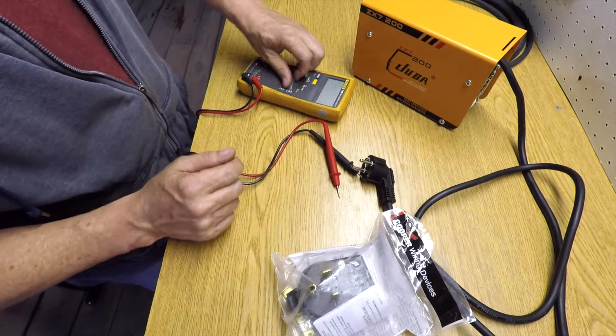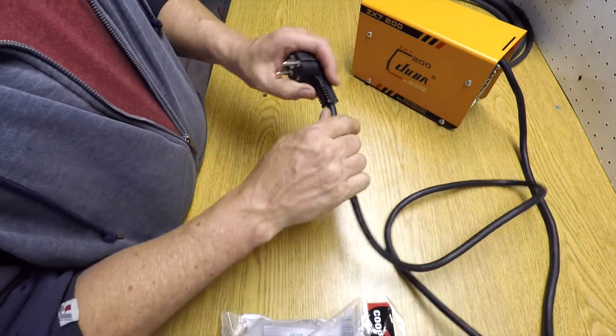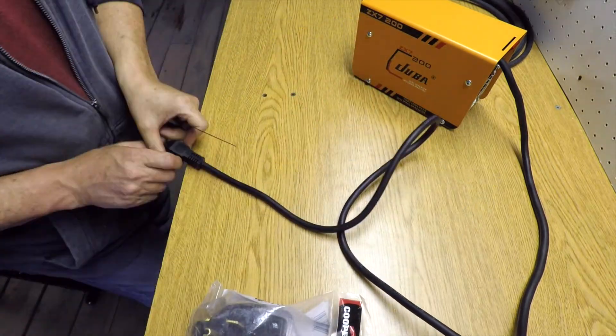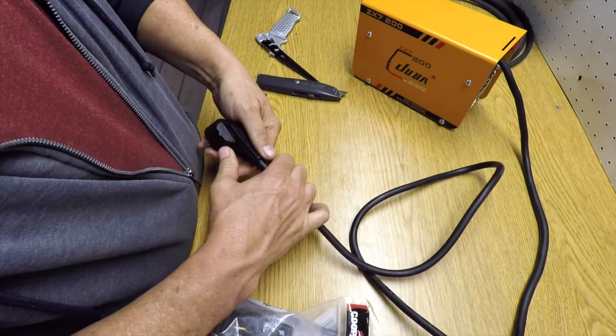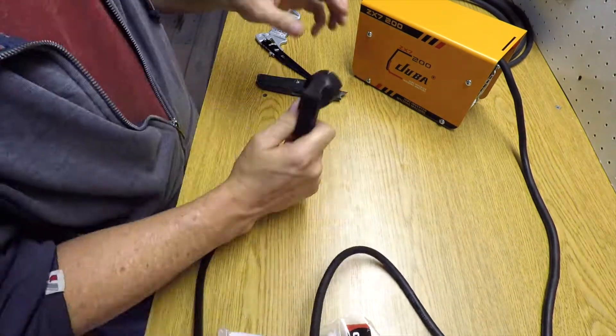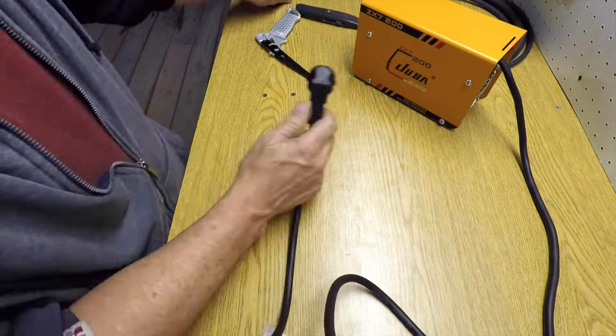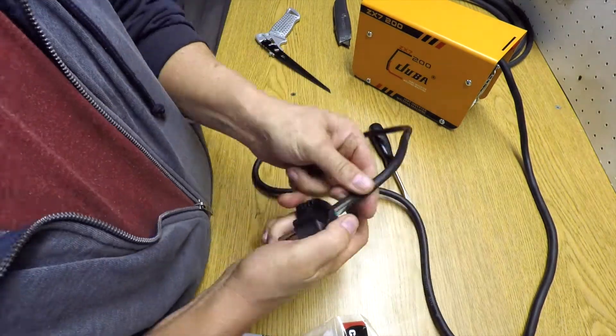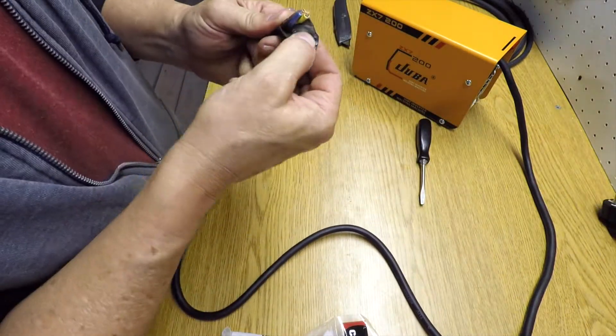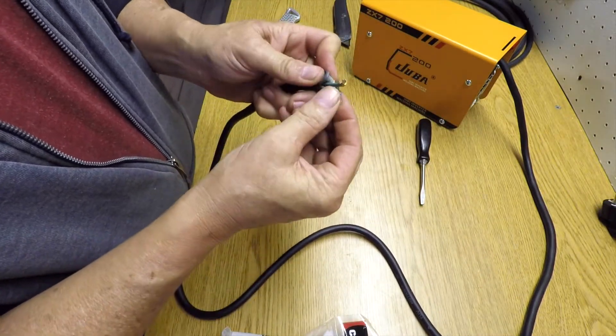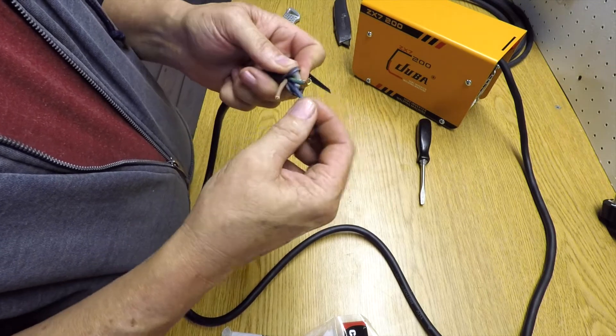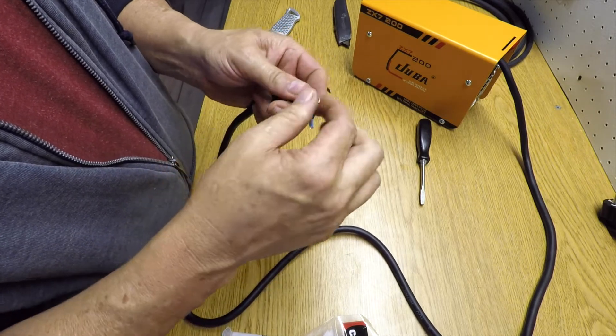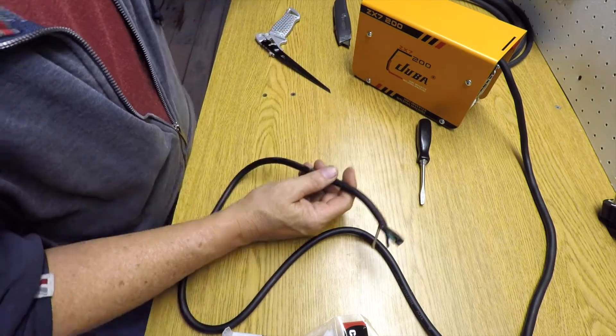So I'm going to cut this plug end off of here, now that I know it has a ground wire in it. That's what I was hoping for. There are three wires: a blue, a brown, and a green slash yellow. I'm assuming that the green slash yellow is the ground, but we'll find out right now with the meter.